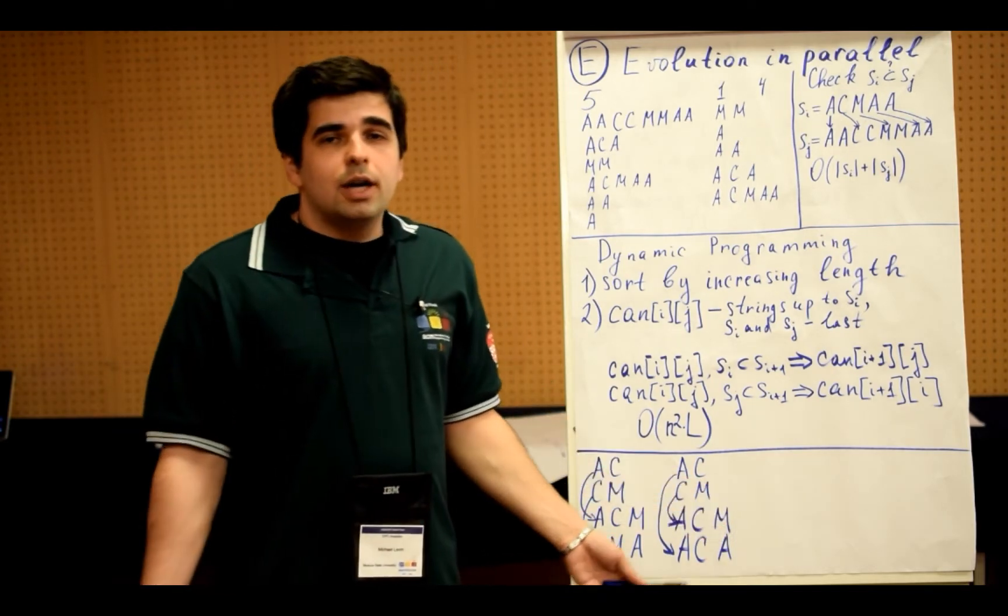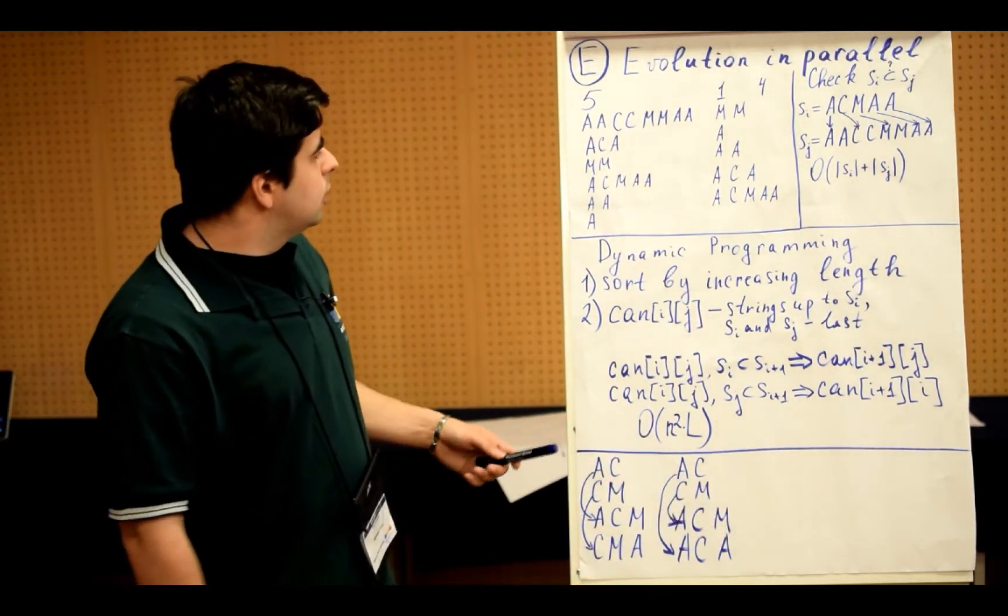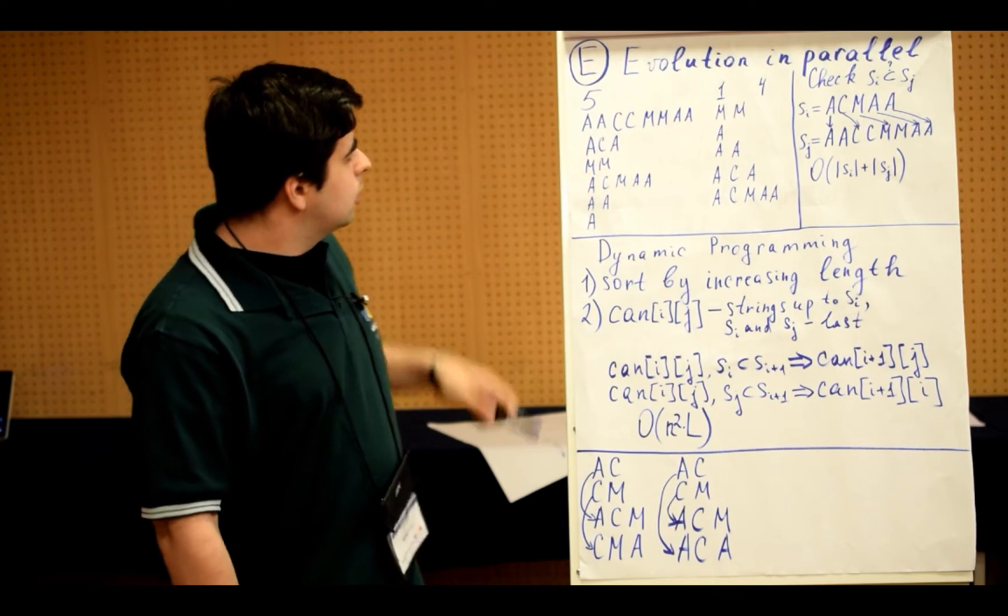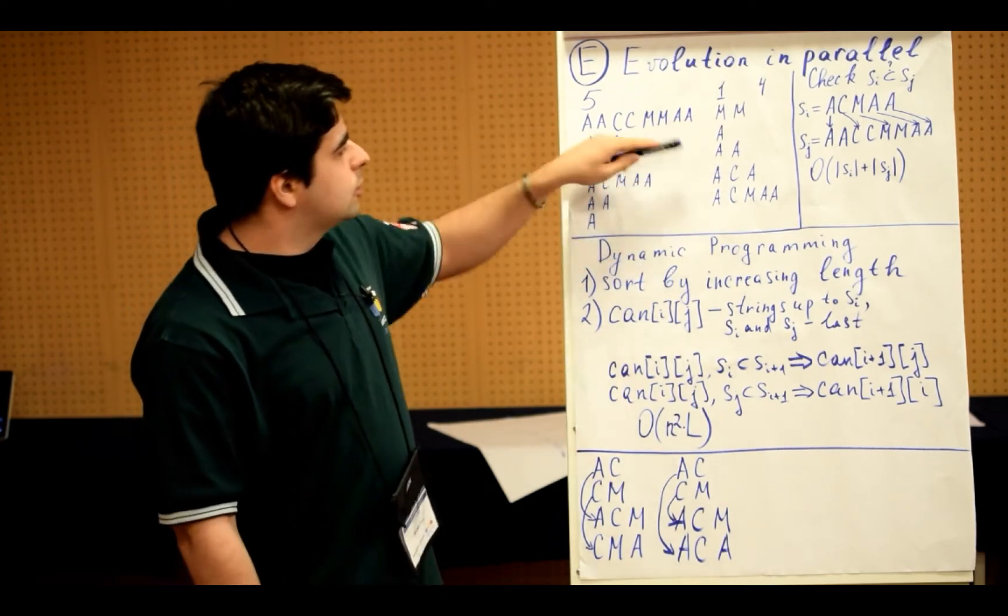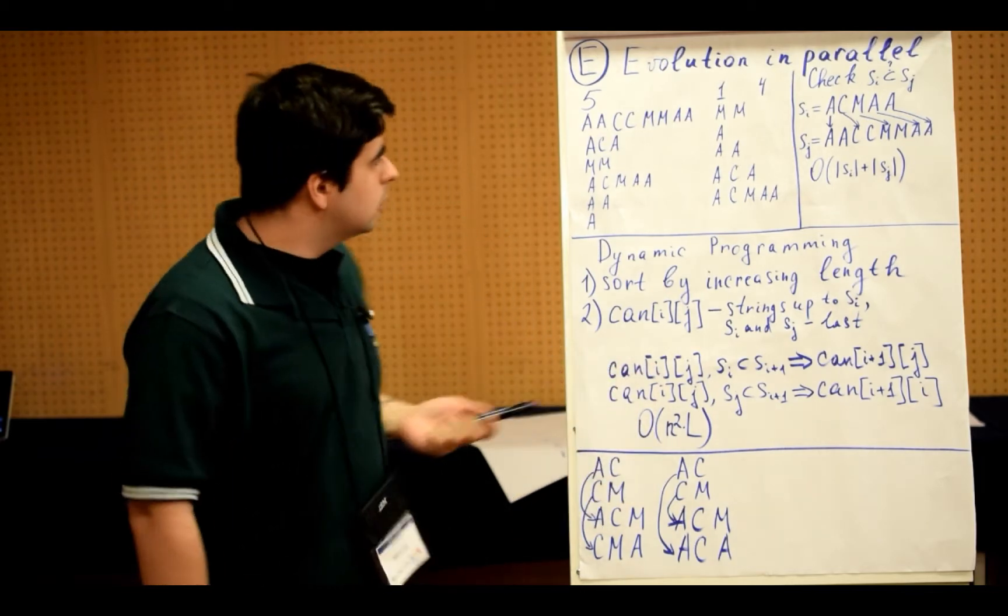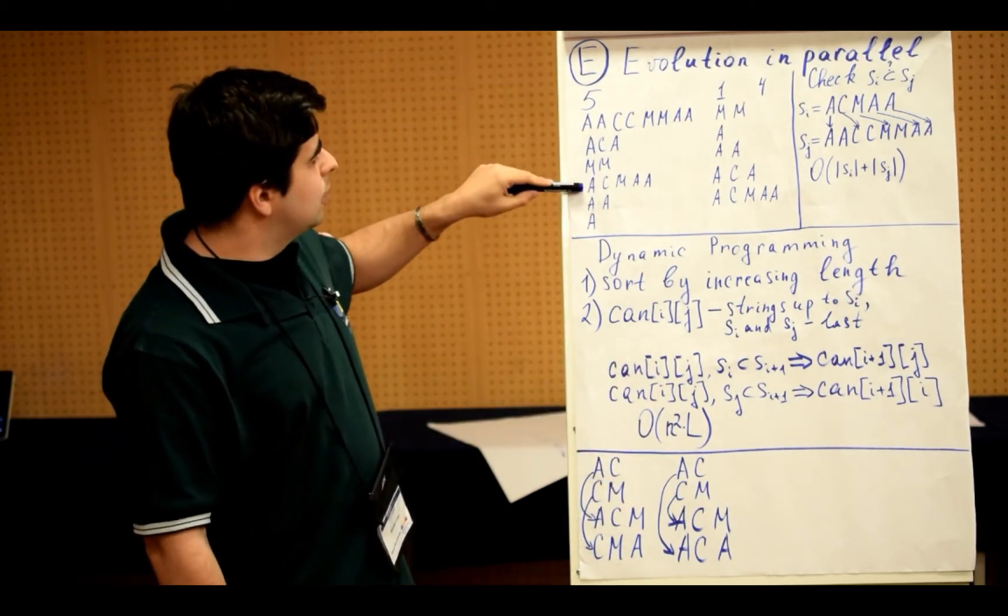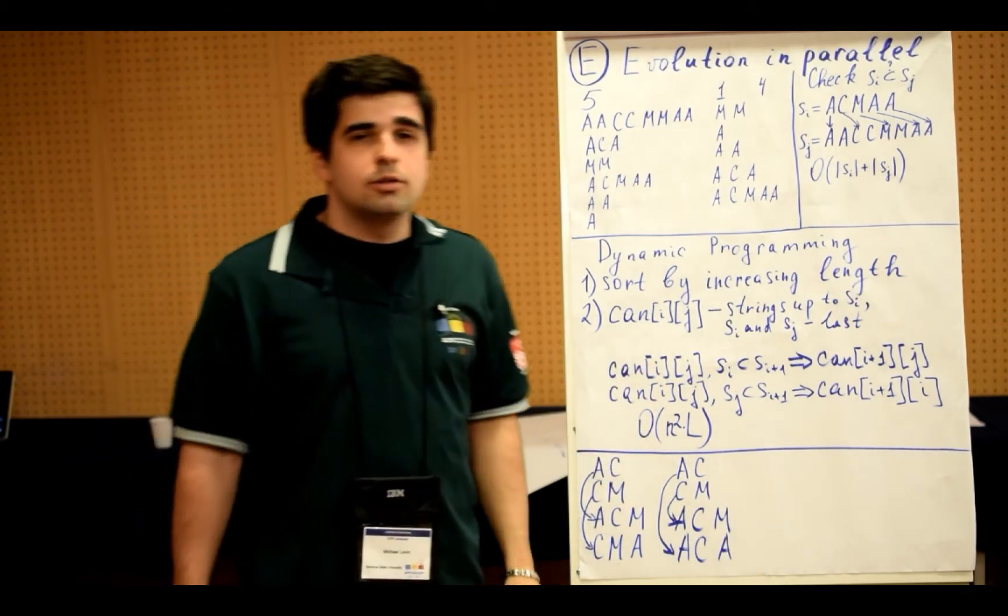So the question is, are they right? Can we actually divide all those genetic codes into two groups, so that there are sequences of strings, and each string is a subsequence of the next one, and also check that each of them is a subsequence of the current genetic code.